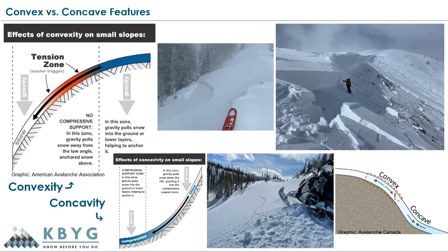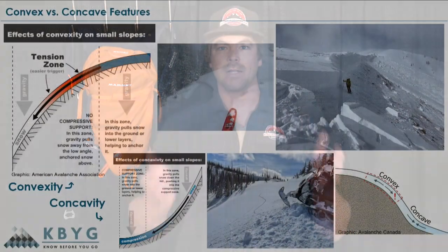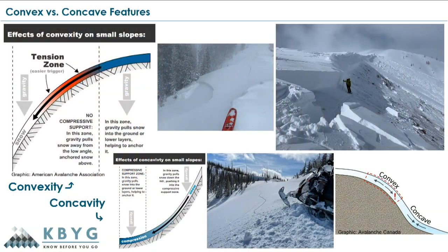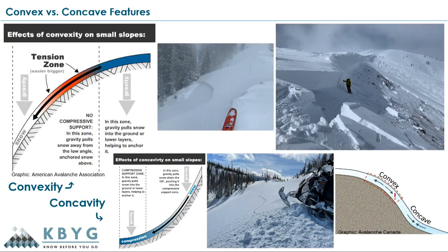The opposite of a convexity is a concavity, which isn't necessarily a place where avalanches like to occur, but it is something we need to think about in terms of terrain traps. If an avalanche came down from above and ended in a concavity, where is that snow going to go? It's just going to pile up really high because there's nowhere for that snow to slide. So if you get caught in even a small avalanche and end up in a concavity, you could have devastating consequences.